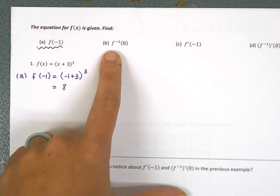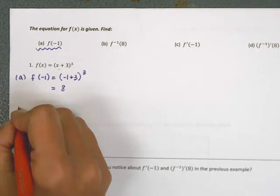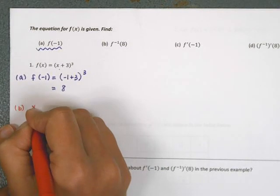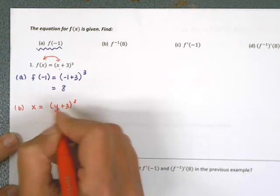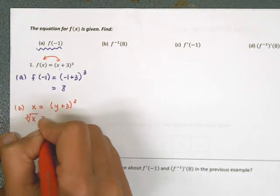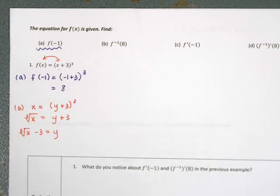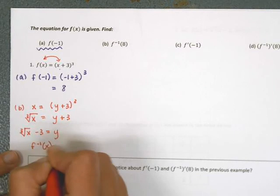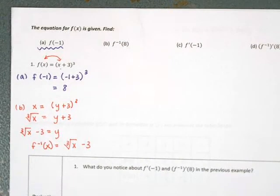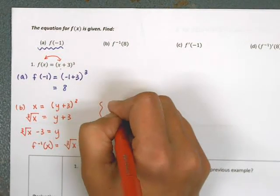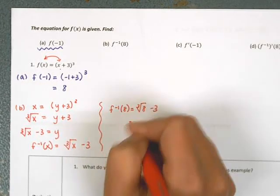Part b says find f⁻¹(8). I can't find f⁻¹(8) before I have an equation for the inverse. So I start by finding one: write x = (y+3)³, switching x and y. Then cube root both sides to get rid of the cube, and subtract 3. So I get the cube root of x minus 3, meaning f⁻¹(x) = ∛x − 3. So f⁻¹(8) = ∛8 − 3 = 2 − 3 = −1.